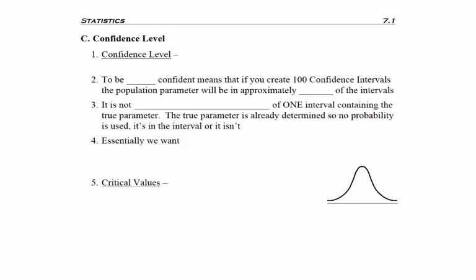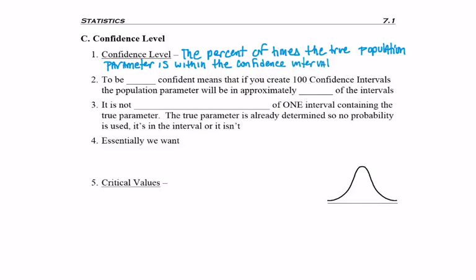So now we need to talk about confidence levels. The definition of a confidence level is the percent of times the true population parameter is within the confidence interval. So for example, to be 95% confident means that if you create a hundred confidence intervals, the population parameter will be in approximately 95 of those intervals.